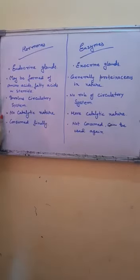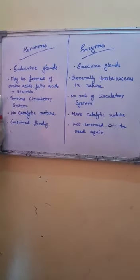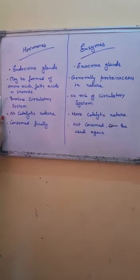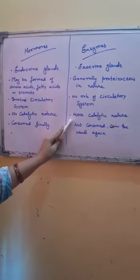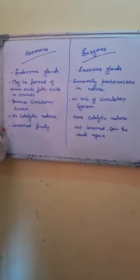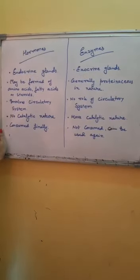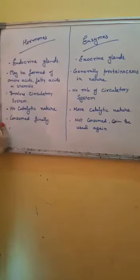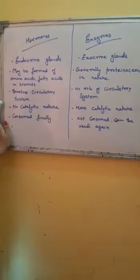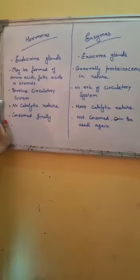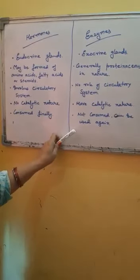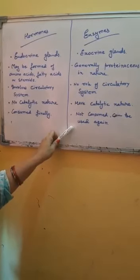The next difference: hormones are not catalytic in nature — they do not catalyze reactions. Whereas enzymes have catalytic nature and catalyze reactions. Another difference: hormones are consumed finally at the end of the process; no hormone is left after the process, they are consumed totally. Whereas enzymes are not consumed completely and can be used time and again.